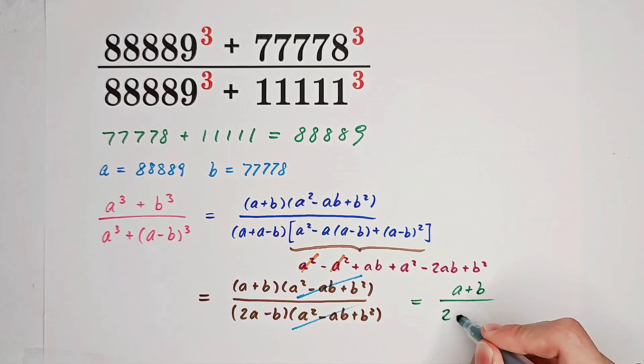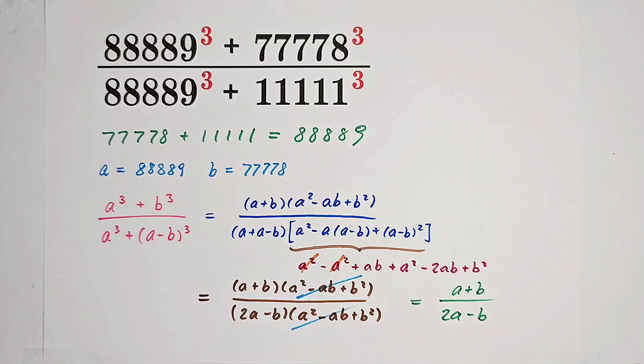A plus B over 2A minus B. So now, just substitute the numbers back in this fraction, and you can get...